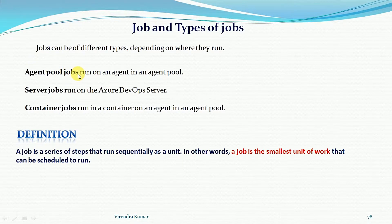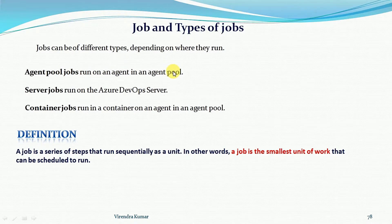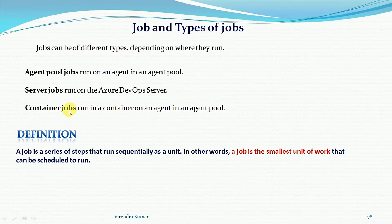The second job type is server jobs — server jobs run on the Azure DevOps server. The third type is container jobs — container jobs run in a container on an agent in the agent pool. The container is slightly different from a VM, like Docker containers, as opposed to virtual machines.